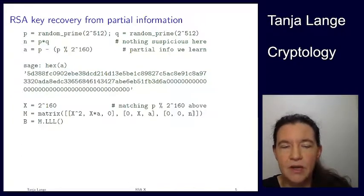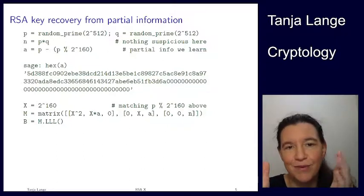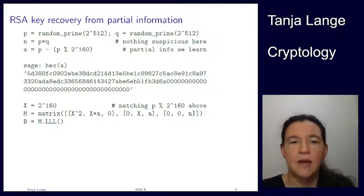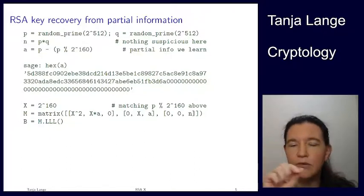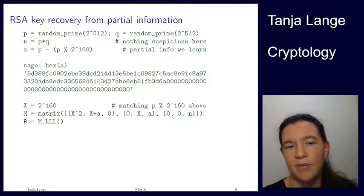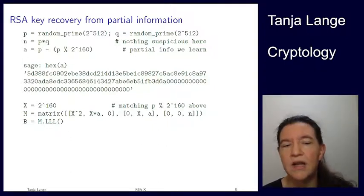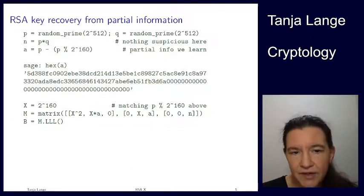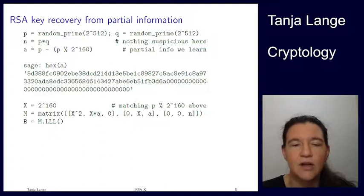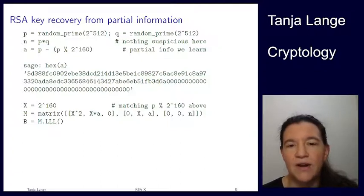Then we build this matrix. First of all, I have now a bound. I don't know the bottom 160 bits, so my bound on the r is 2 to the 160. Then the matrix, that was the X squared, X times a, zero. This was the polynomial shifted by X, this was the normal polynomial, and this is just the n from up there. SAGE has an implementation of LLL. This is why I suggested at the beginning of the semester that you get a bit familiarized with SAGE, because this has a very convenient implementation. There are several standalone implementations of LLL. If you have a different computer algebra system, you can maybe also find it. For instance, Pari GP has it as well, but I don't know whether Mathematica has it.